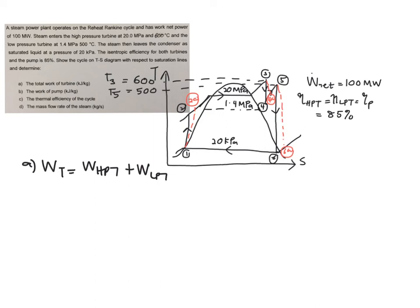Next, find the pump work, which is between state 1 and state 2. Since you have isentropic efficiency, you must use the actual value, so the pump work will be H_2a minus H_1.